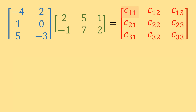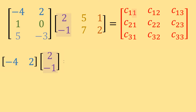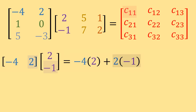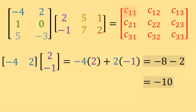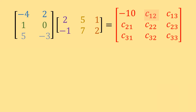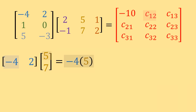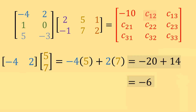To find C11, we multiply row one of matrix B times column one of matrix A: negative 4, 2 times 2, negative 1. That gives negative 4 times 2 plus 2 times negative 1, which equals negative 8 minus 2, which equals negative 10. So C11 equals negative 10. For C12, we use row one of matrix B times column two of matrix A: negative 4, 2 times 5, 7, giving negative 4 times 5 plus 2 times 7, which equals negative 20 plus 14, which equals negative 6.